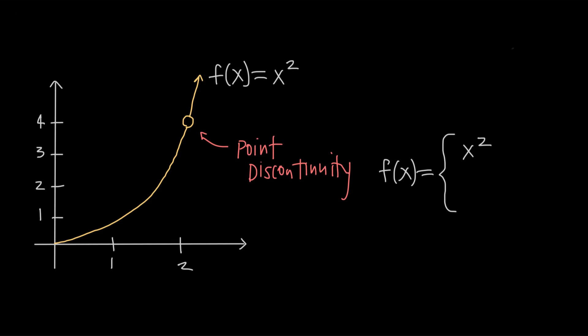The value of the left-hand limit as x approaches 2 is 4. In other words, the function is getting close to 4 when we trace the graph from the left and get close to x equals 2. The right-hand limit is also 4. Since the left and right-hand limits are equal, that means the general limit exists and that the general limit is also 4.